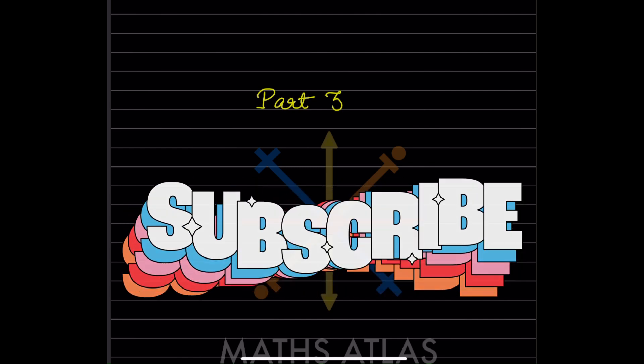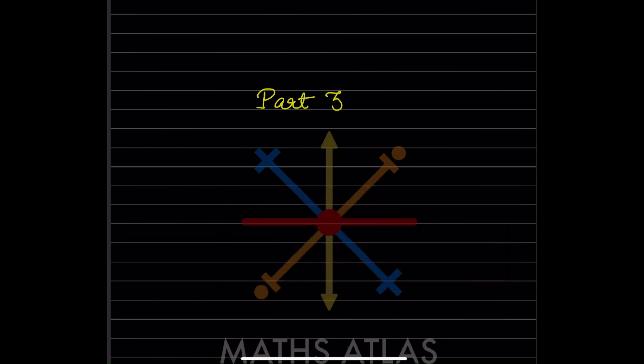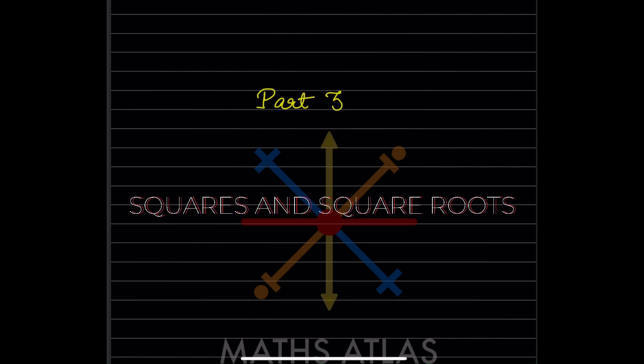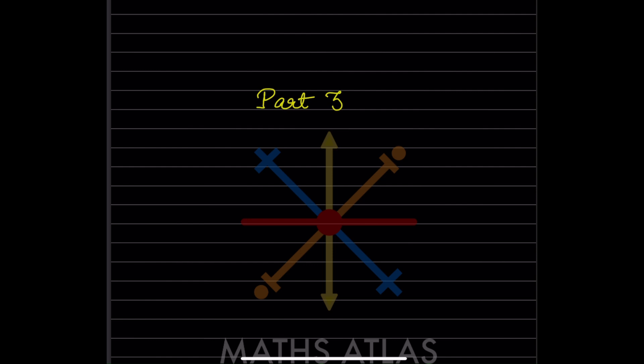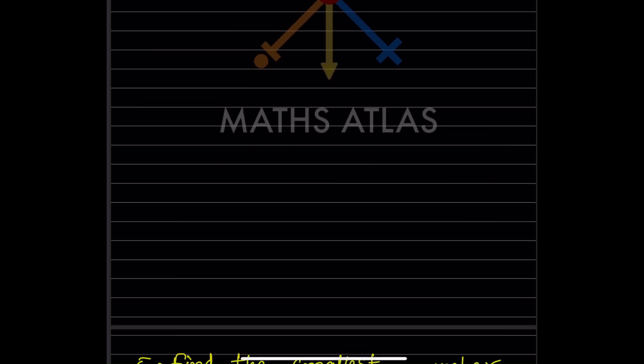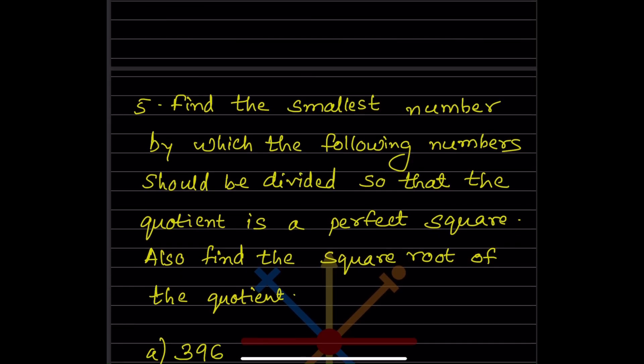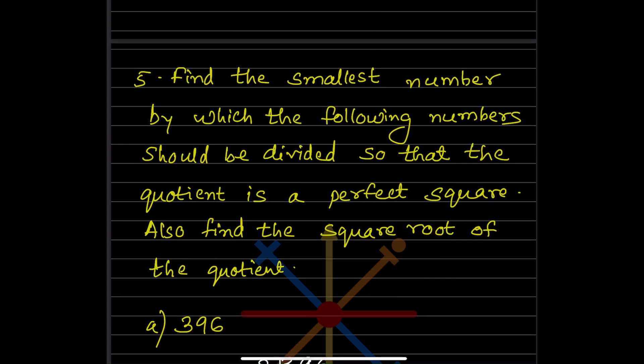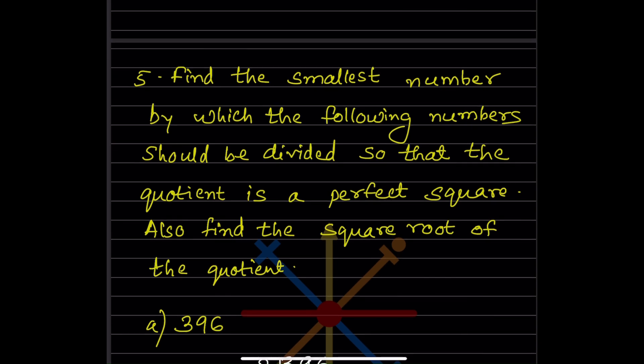Hi learners, welcome to my YouTube channel. Today let us do Part 3, the remaining questions of Exercise 3.2. We are already done with four questions before. If you have not watched that video, you can watch it. Now today we'll start with question number five: find the smallest number by which the following numbers should be divided so that the quotient is a perfect square.